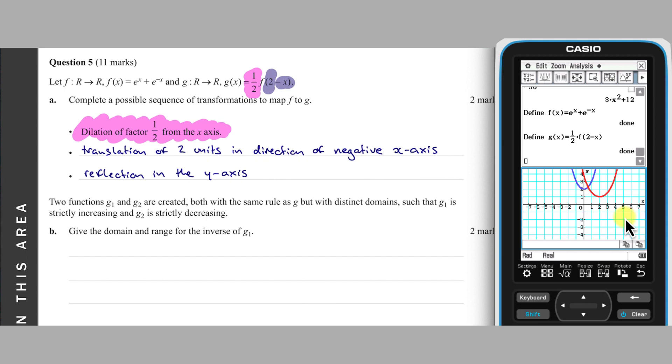In part B, the function G of X is split into two functions, G1 and G2, such that G1 is strictly increasing and G2 is strictly decreasing. One way to do this is to split the domain of G at its turning point.